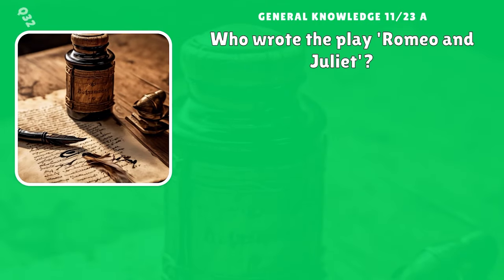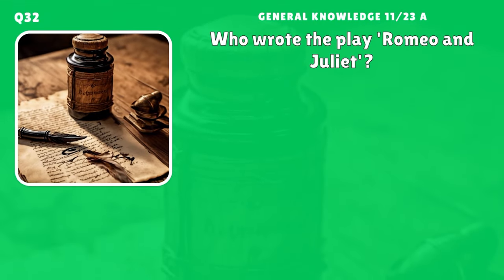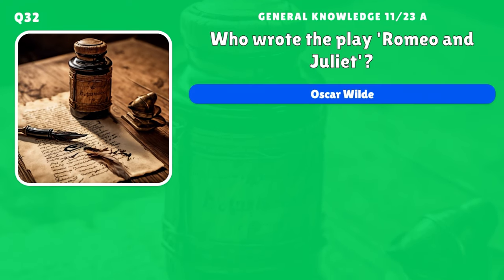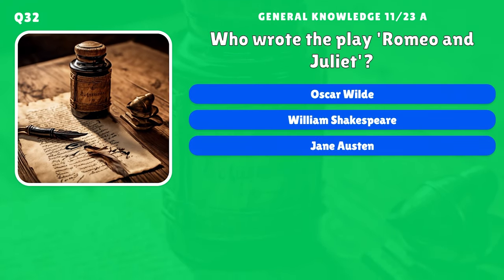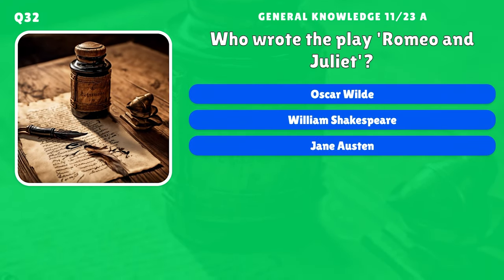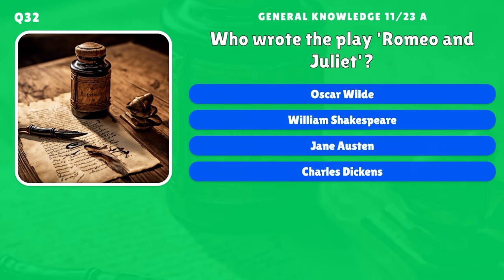Who wrote Romeo and Juliet? A) Oscar Wilde, B) William Shakespeare, C) Jane Austen, D) Charles Dickens.